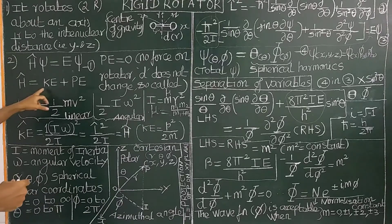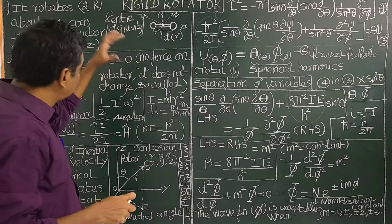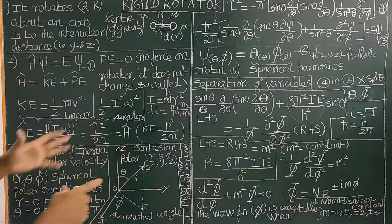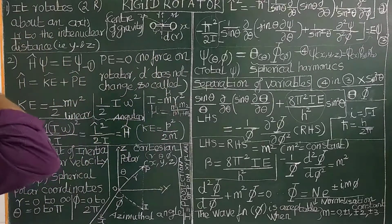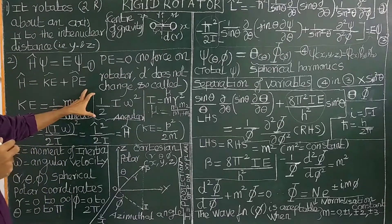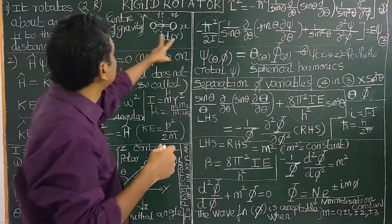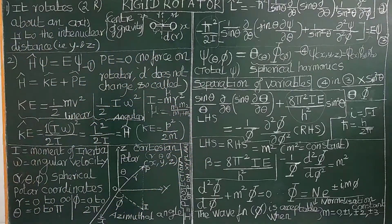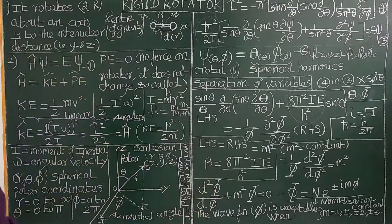In the case of the rigid rotator, the Hamiltonian operator is the sum of the kinetic energy operator and the potential energy operator. The potential energy is equal to zero because there is no force acting on the rigid rotator. It is called a rigid rotator because the internuclear distance does not change during rotational motion.